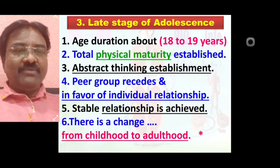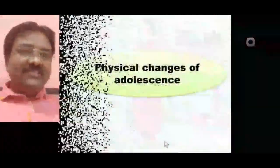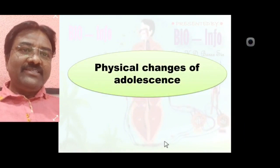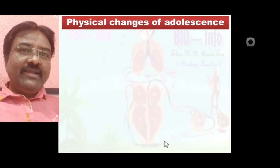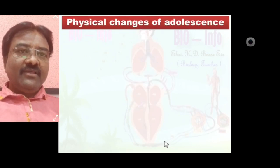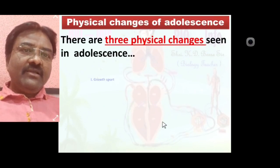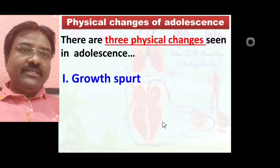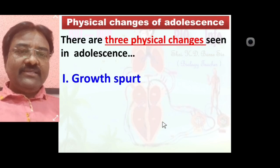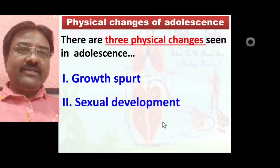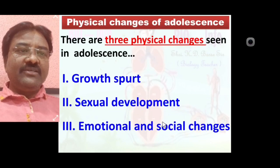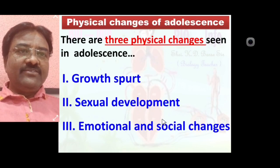Up to this we have discussed different stages of adolescence: early, middle, and late. Now we will discuss the physical changes of adolescence. There are three physical changes seen in adolescence: first, growth spurt; second, sexual development; and third, emotional and social changes.